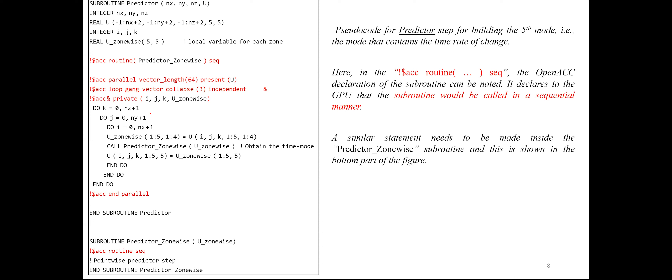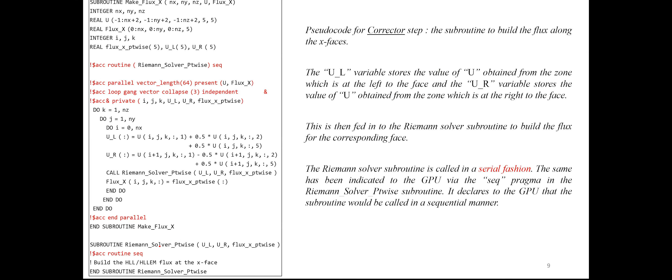The predictor step in each of these applications is extremely important and computationally expensive. We need a subroutine that performs this predictor step, and this subroutine will have to be declared as sequential, matched up with a corresponding sequential call. That's the important idea here.